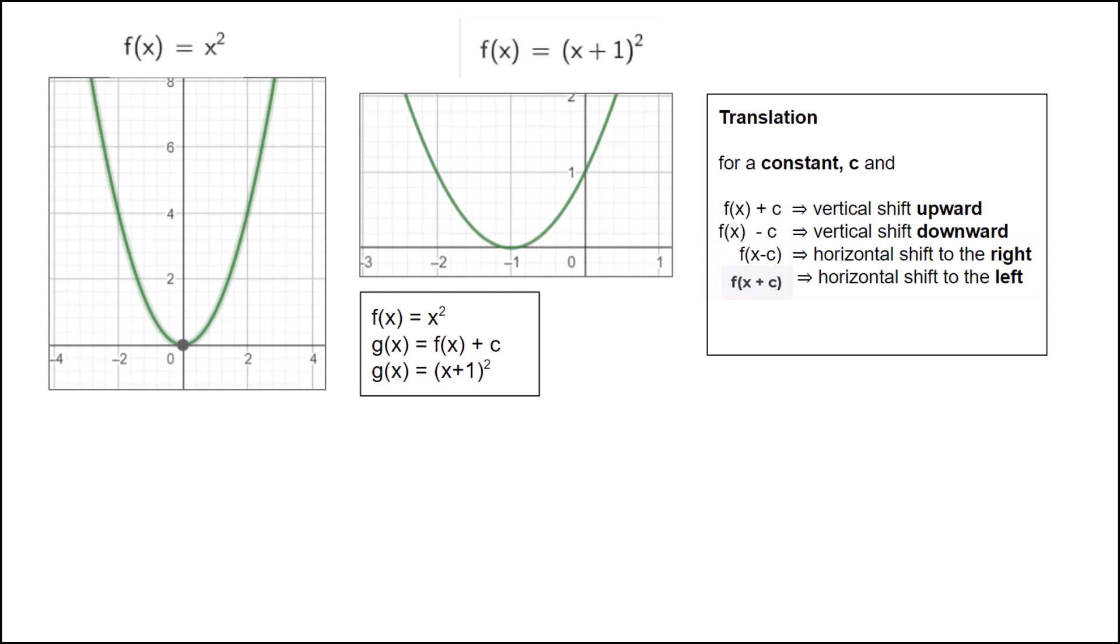If we take the function we've been working with, y equals x squared, and we add 1 to that, we know that will shift it upwards. But if we want to shift it to the left by 1, we would actually evaluate (x + 1) squared.